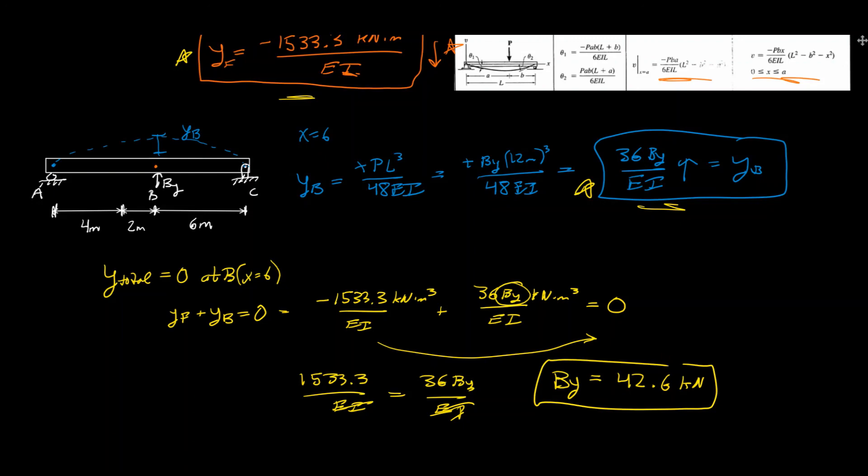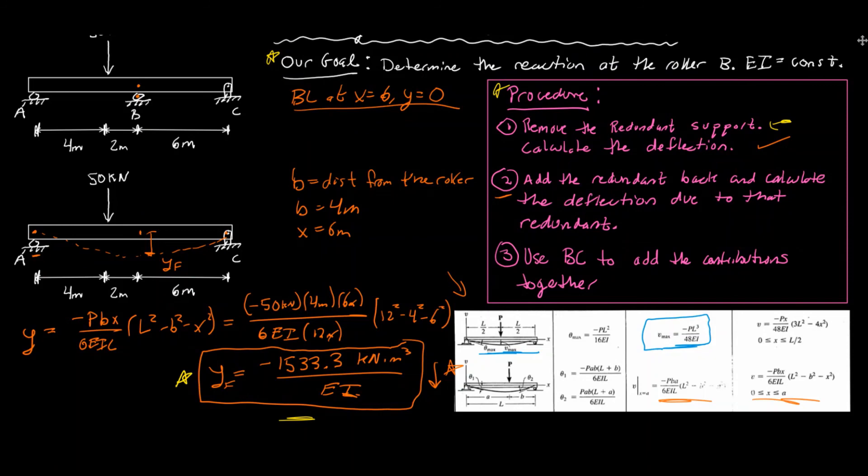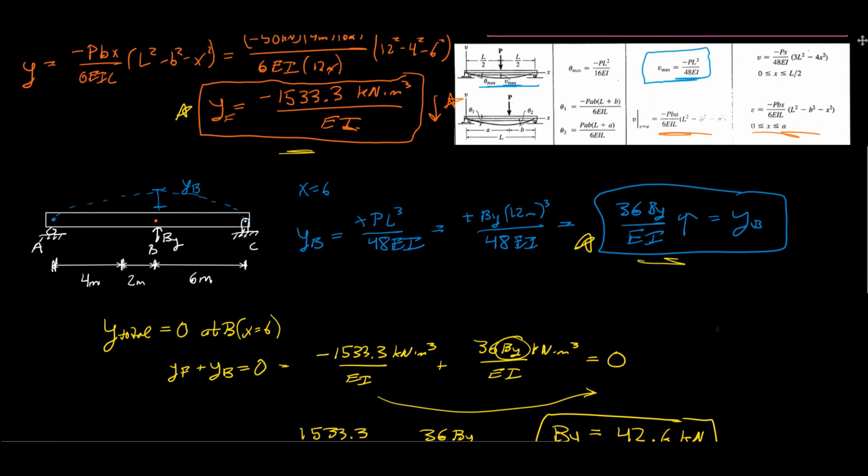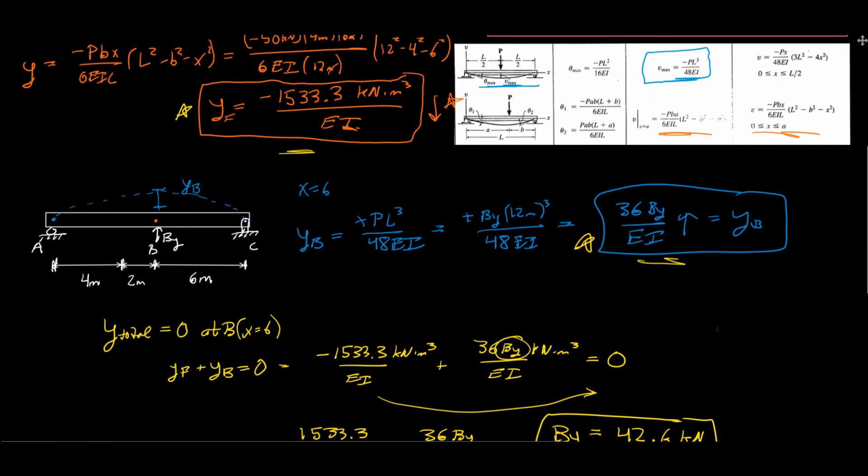BY equals 42.6 kilonewtons — that's our answer. This problem asks for the reaction at roller B, which is BY. That's how you solve an indeterminate beam problem using superposition. For a lot of these indeterminate problems, superposition is probably the easiest approach. Hopefully this helped.